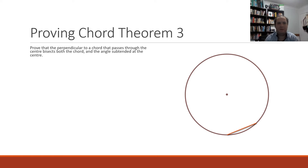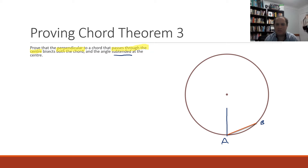We've got to prove that the perpendicular to a chord that passes through the center bisects both the chord and the angle subtended at the center. Let's highlight a couple of key ones. We've got a perpendicular to our chord that passes through the center. Looking at our chord here, let's call that AB. Because we've got this word subtended in our proof, I'm going to draw some lines to the center to create our subtended angle — from A to our center and then from our center out to B.